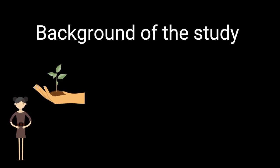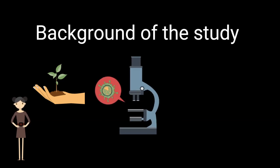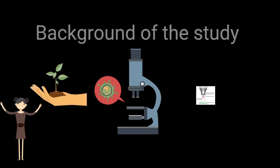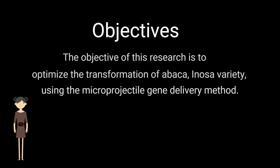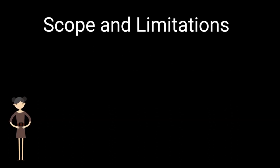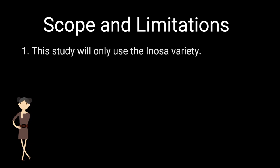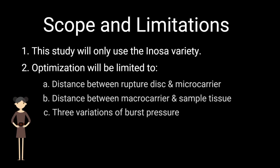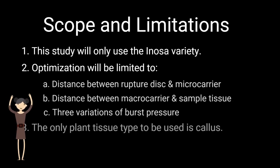I only have 15 minutes for my presentation. So what should I highlight? For the background, I should talk about the biology of abaca, at least those most related to the topic, the abaca bunching up virus and its impact and mode of infection, and then maybe how the BioListics method works in introducing new genes. For my objective, instead of reading it out, I should discuss the logic behind it and how I plan to achieve it. And then for the scope and limitations, I should talk about why I'm only using one variety and why that variety, the selection of parameters I'll be altering and its implications on the number of test runs I'll need to do. Oh, and I should also talk about what a callus is and why I need to use it.